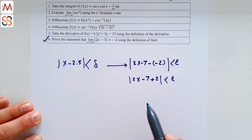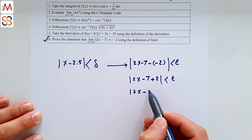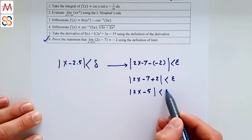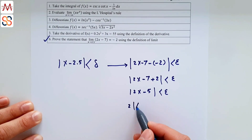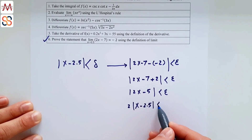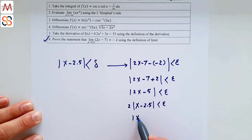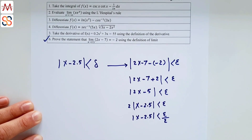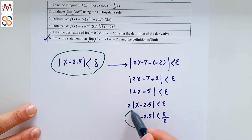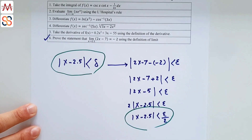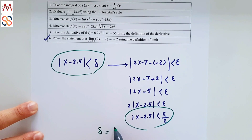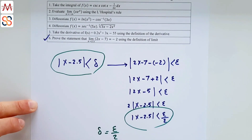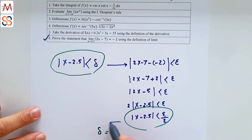Factor out 2 from |4x - 5|: we get 2·|x - 2.5| < ε, so |x - 2.5| < ε/2. Comparing with |x - 2.5| < δ, we identify the relationship: δ = ε/2, and the proof is complete.